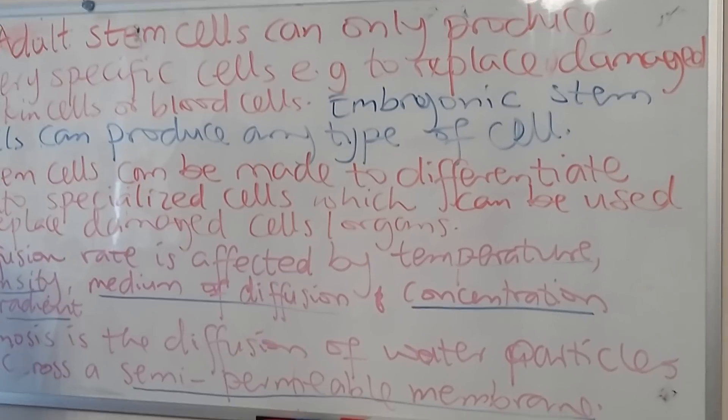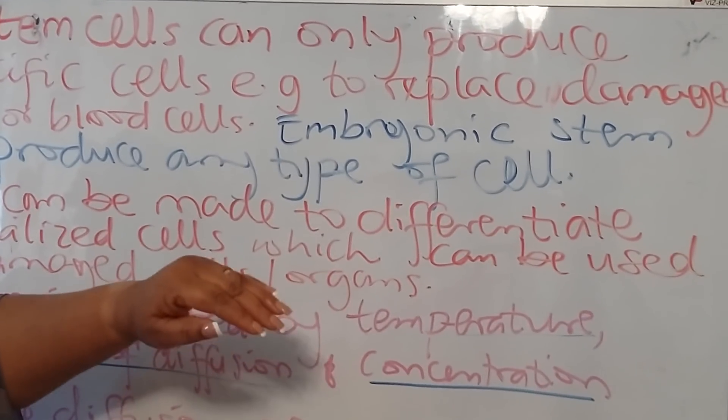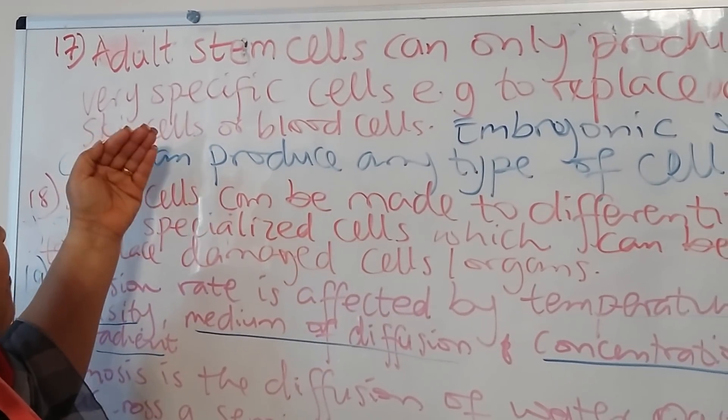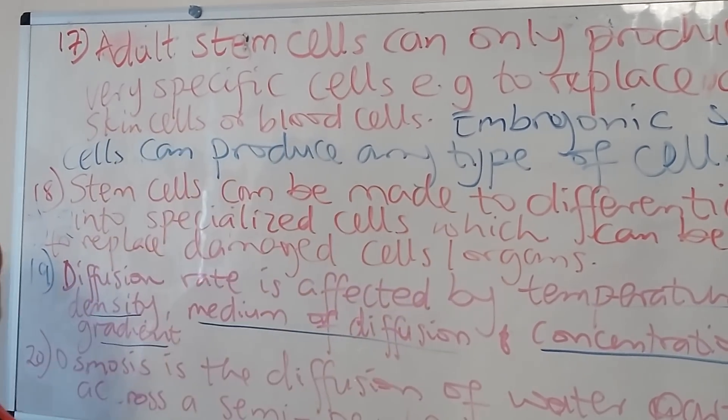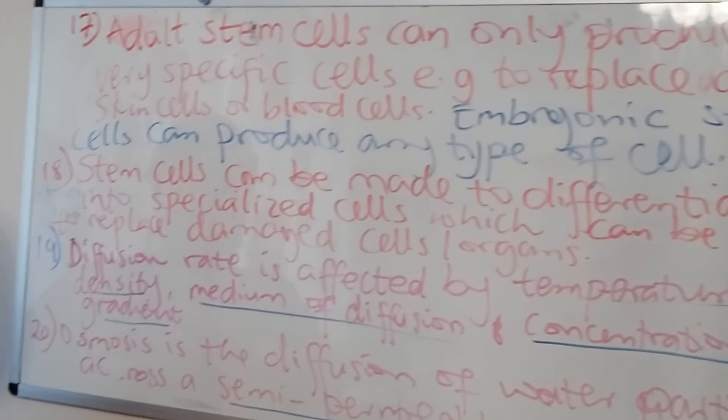On the other hand, embryonic stem cells can actually differentiate to reproduce any type of cell.